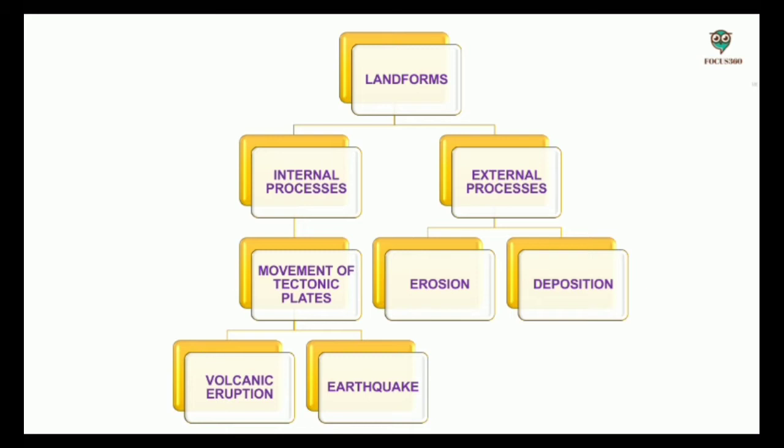The Earth beneath our feet is continuously moving, which causes movement in tectonic plates. This results in earthquakes and volcanic eruptions, which leads to upliftment and sinking of the Earth's surface at several places. The external process is again of two types: continuous wearing of soil from the Earth's surface is called erosion, which lowers the surface, and rebuilds through the process of deposition of silt, rock, and sand in other places.